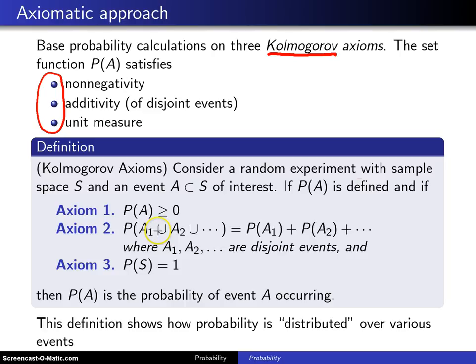Second of all, if the probability of A1 union A2 union dot dot dot is the sum of the associated probabilities, where A1, A2, etc. are disjoint events.